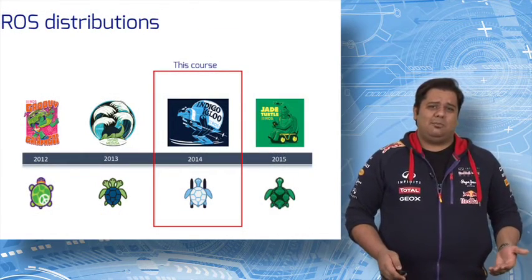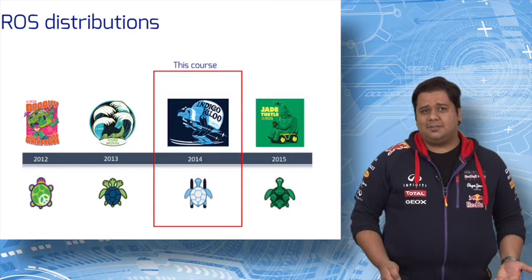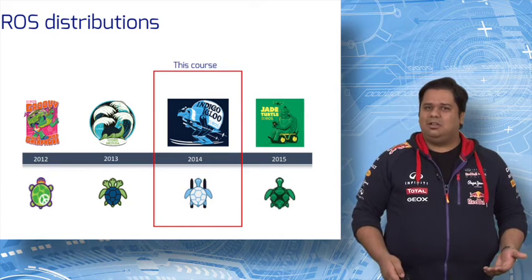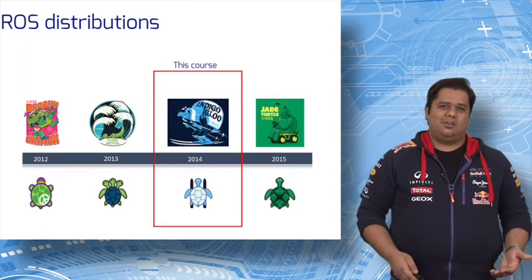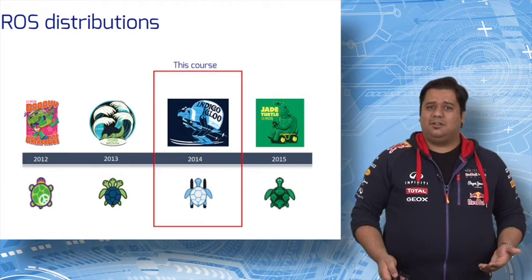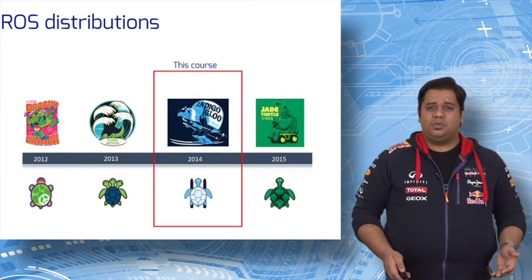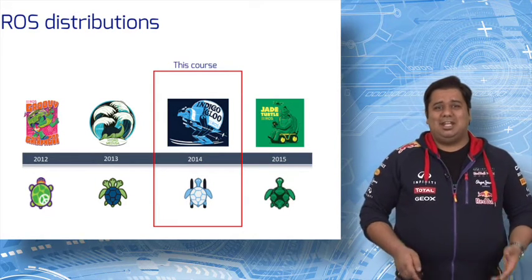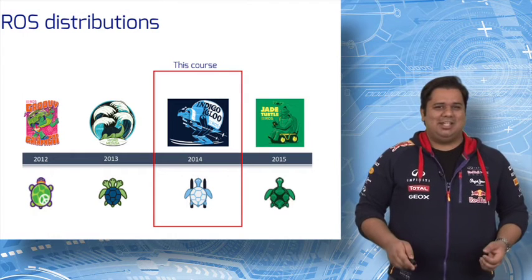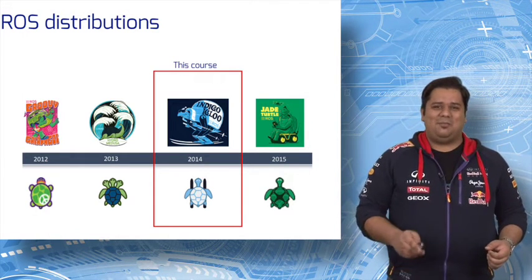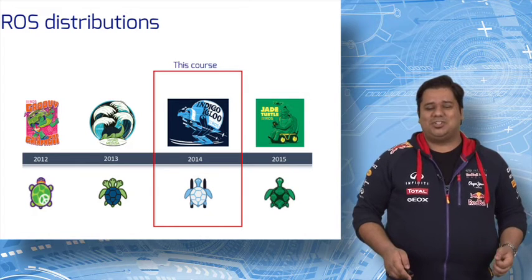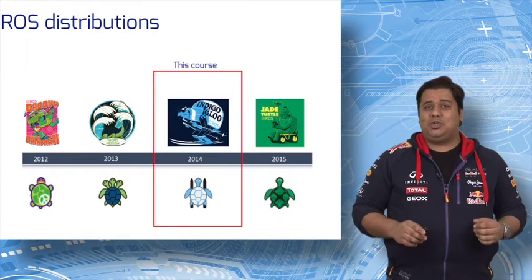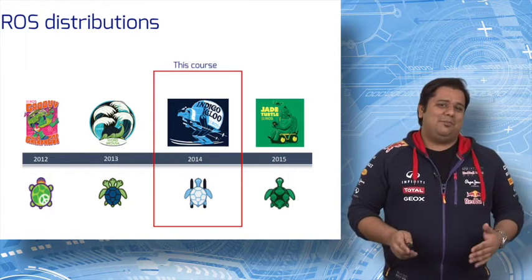ROS is released in the form of distributions, which is a set of ROS packages. ROS distributions let developers work against a relatively stable code base. We will be using the ROS Indigo Igloo distribution for this course, which is a stable release for Ubuntu 14.04, also known as Ubuntu Trusty. In case you are wondering why we have images of turtles on the screen, don't worry about it. Their role will become very clear in due course of time. These turtles are called two turtles, and each distribution has an accompanying two turtle.